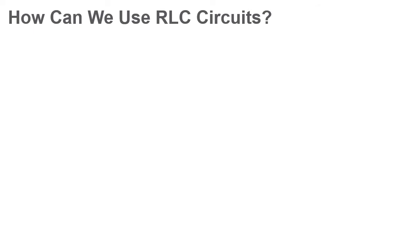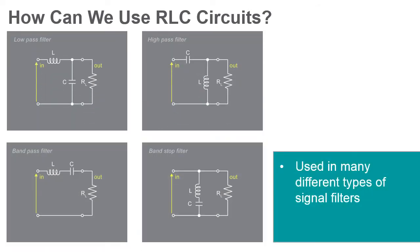As mentioned earlier in this video, RLC circuits are also used as many different types of signal filters. Low, high, and bandpass filters are common use cases, as are bandstop filters. These different filters are achieved by changing the arrangement of the individual RLC components within the circuit.